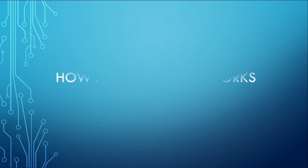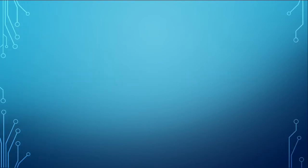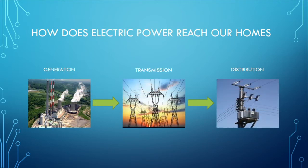Today we will be explaining how a grid station or a substation works. But before going into further details, first we must understand how electric power reaches our homes. This is the simplest explanation of an electrical system. There are three major portions: generation, transmission, and distribution.